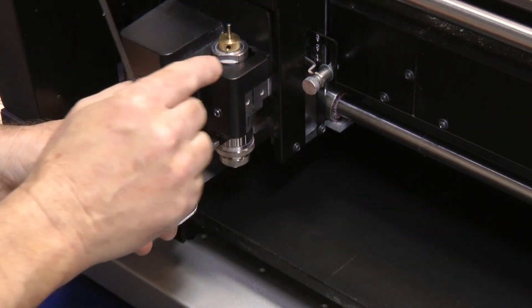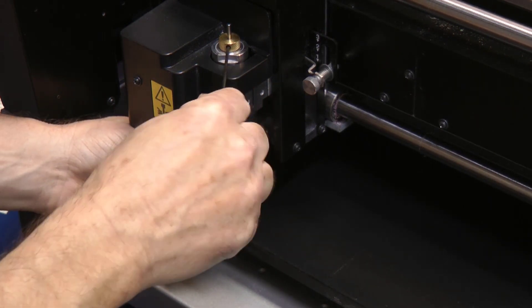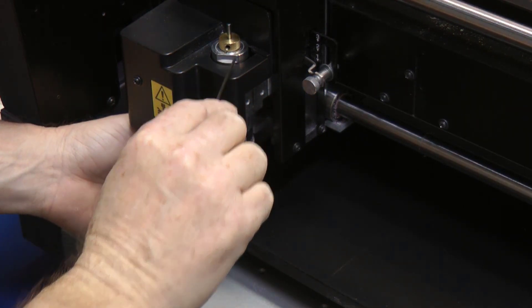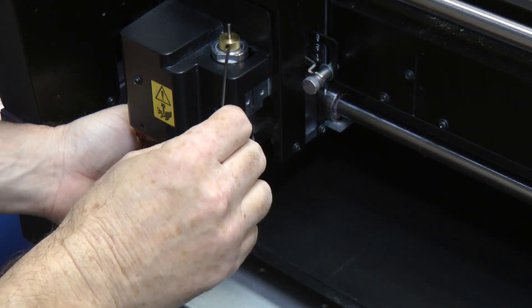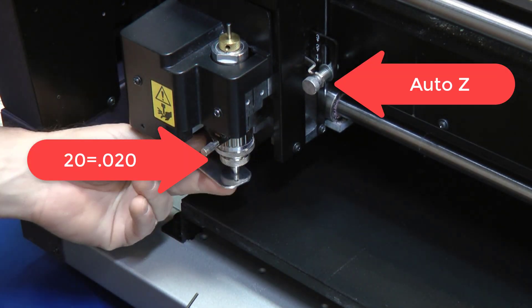Now grab your hex driver, insert and loosen the tool using our flat surface to flush it up with the bottom of the nose cone. Now let's adjust the tool depth.